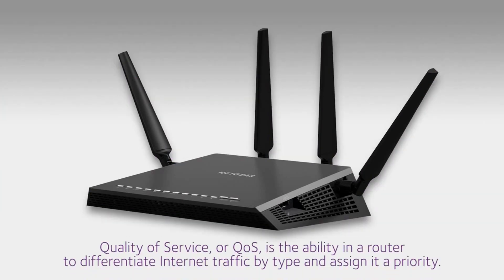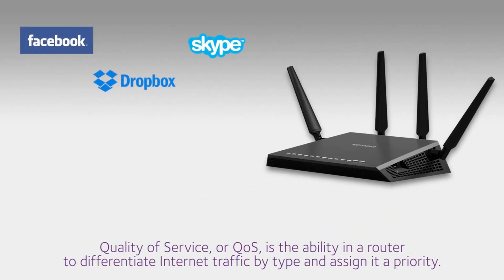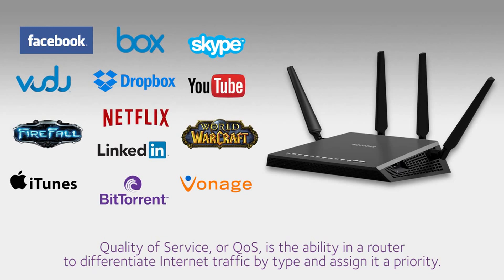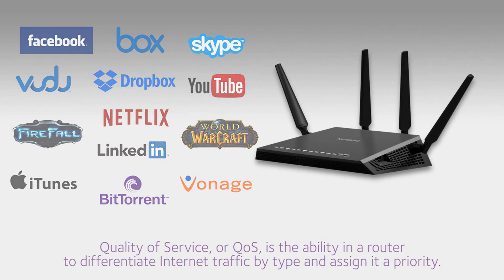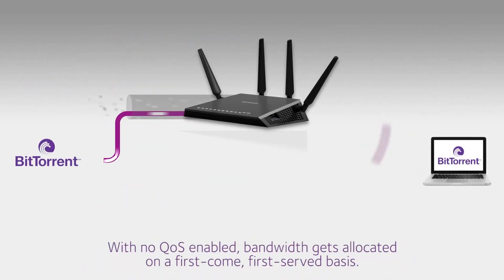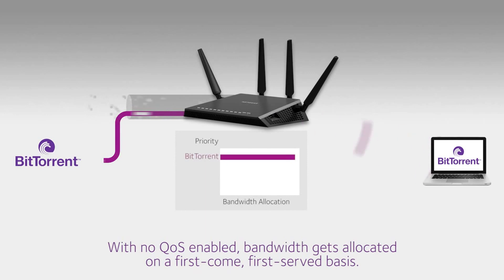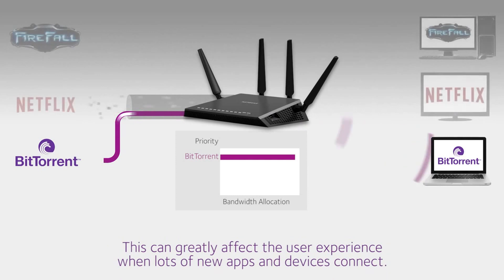Quality of service, or QoS, is the ability in a router to differentiate internet traffic by type, such as video, voice, and data, and assign a different priority to that traffic to maximize available bandwidth. With no QoS enabled, the X4 router simply allocates bandwidth on a first-come, first-served basis.